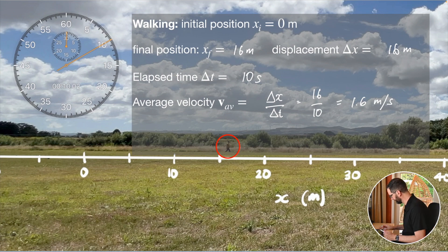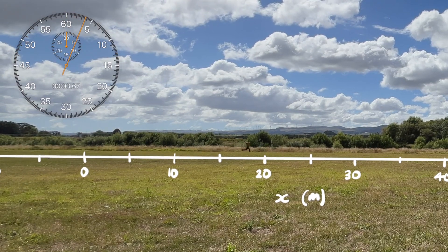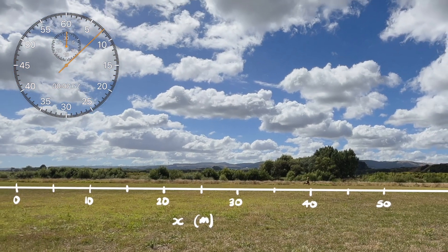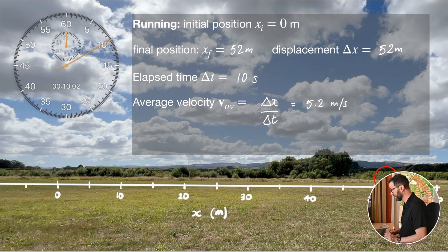Now let's see what it will be if I do some running. We're going to do our 10-second run starting now. Let's do the same exercise. When I went running I covered a bit more ground, so my final position this time is about 52 meters approximately. My displacement is therefore 52 minus zero, which is plus 52 meters, and elapsed time once again 10 seconds. So my average velocity is displacement divided by time, which gives me 5.2 meters per second. Obviously I'm no Olympic sprinter, but a fast sprinter can do 100 meters in 10 seconds, so the upper limit for human speed is around 10 meters per second.